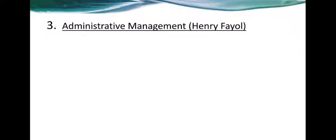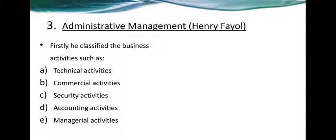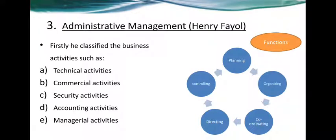Now we will talk about the last element of the classical approach: administrative management, wherein the father of management, Henry Fayol, firstly divided the activities of business into various categories and accordingly suggested various functions of management. The activities divided are: technical activities, commercial activities, security activities, accounting activities, and managerial activities. To properly operate and function within these activities, five principal functions of management are described: planning, organizing, coordinating, directing, and controlling.